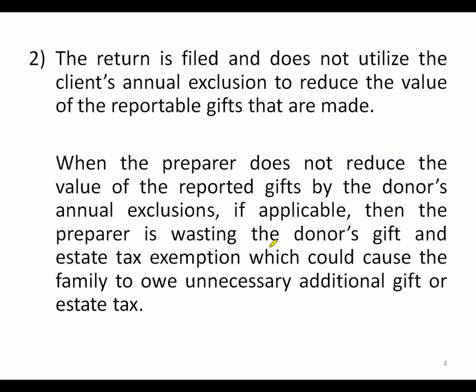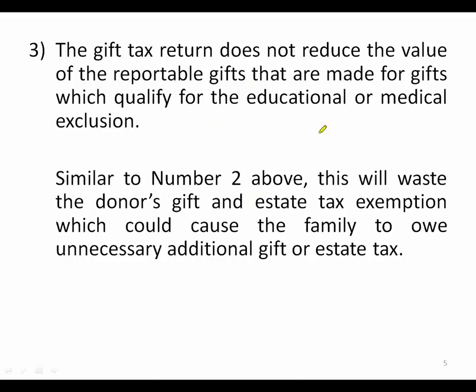A second common mistake is that the client's annual exclusion is not used appropriately to reduce the value of taxable gifts. When that happens, you're wasting the client's exemption. For example, instead of reporting a $100,000 gift, it should be reported as $76,000 if $24,000 of Crummey gifts are available — otherwise you waste that $24,000. Similarly, not reducing reportable gift values for educational or medical exclusions will also waste exemption.